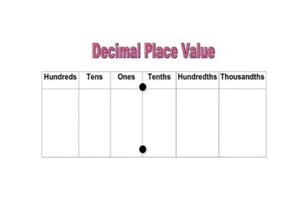If we look at a decimal place value chart like we have here, we can see that right here is our decimal point. Anything in front of our decimal point — ones, tens, hundreds — are whole numbers. Everything behind our decimal point — tenths, hundredths, thousandths — are decimals.